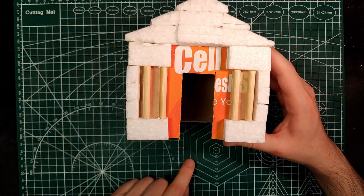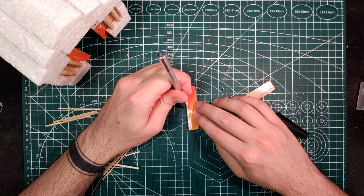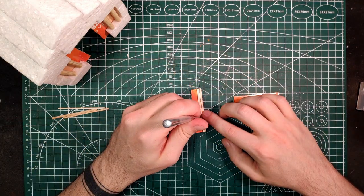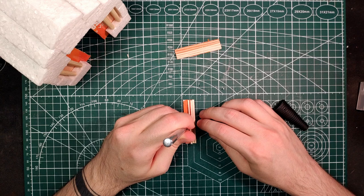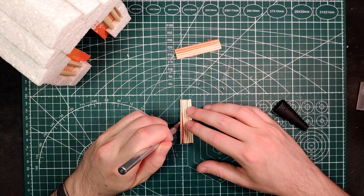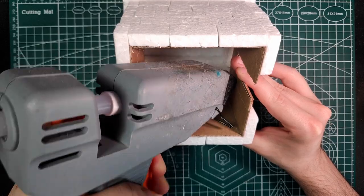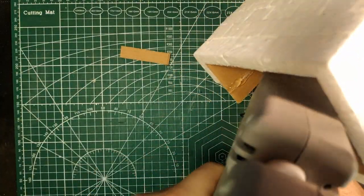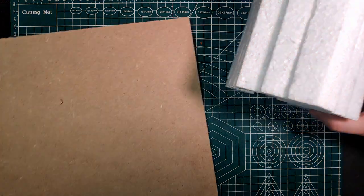Once everything is glued together, we can decorate a bit as we like and work on the door. To make that, cut a hole in the cardboard and use the cutout as a base structure on top of which we are going to glue some thin pieces of wood. After that, the mausoleum is done and we can work on the base.